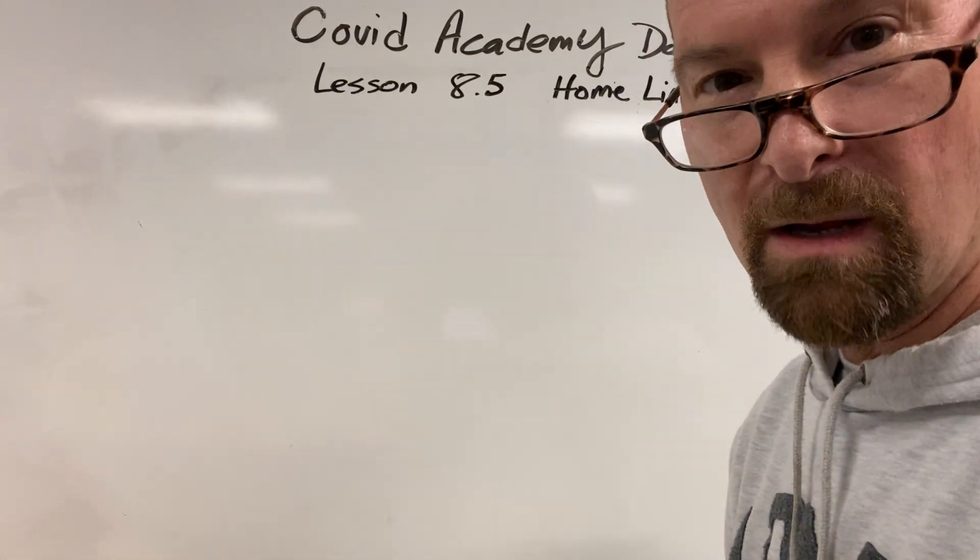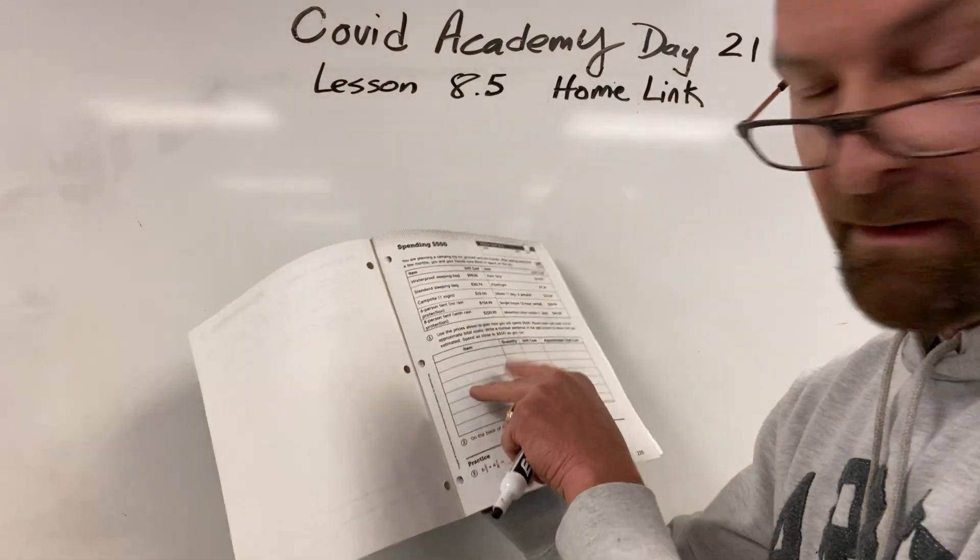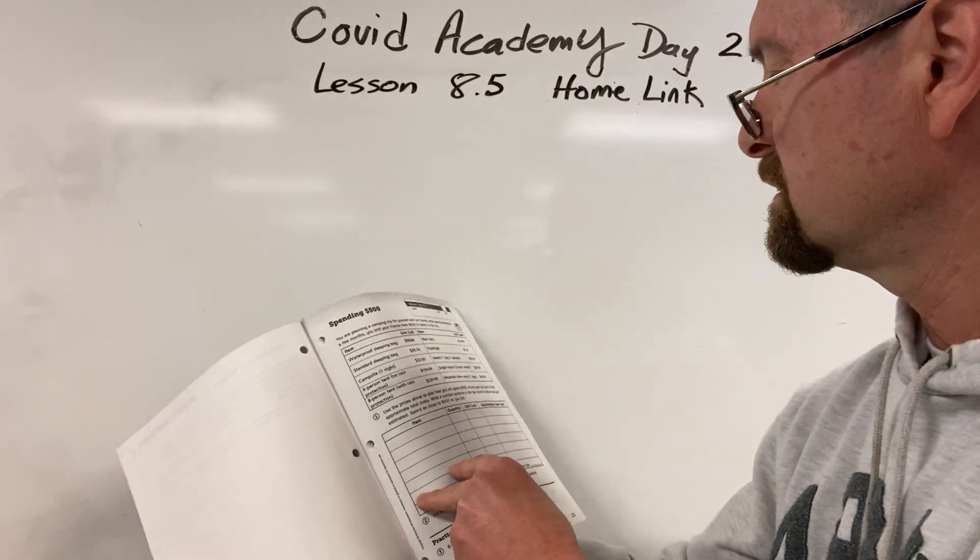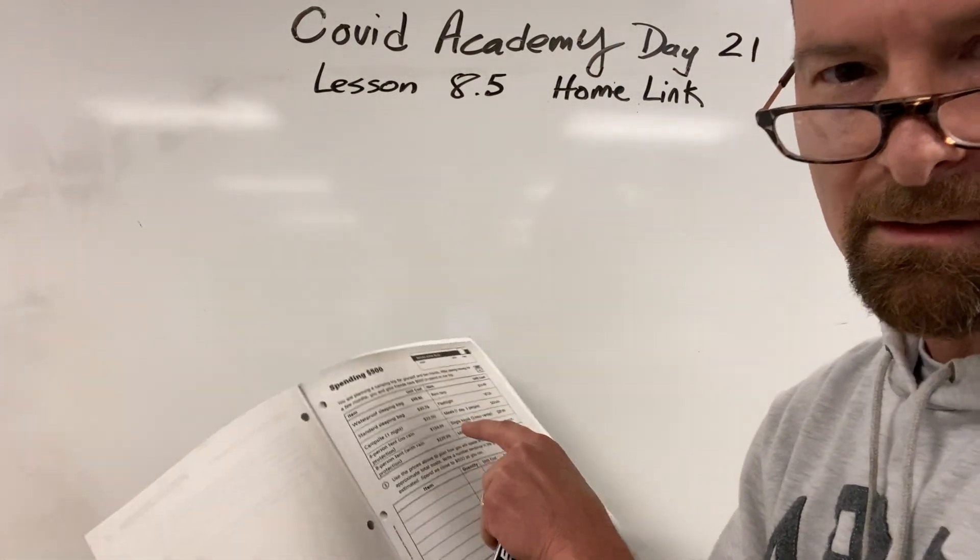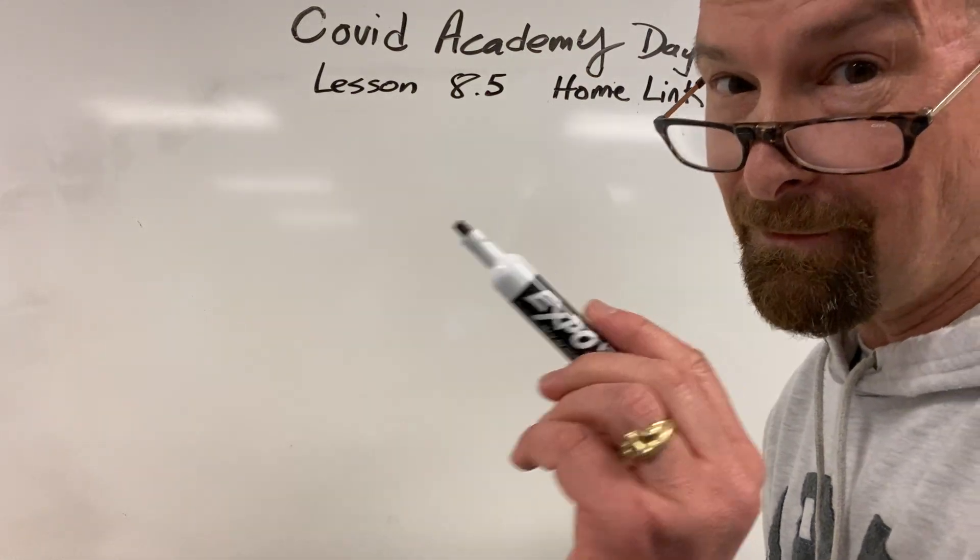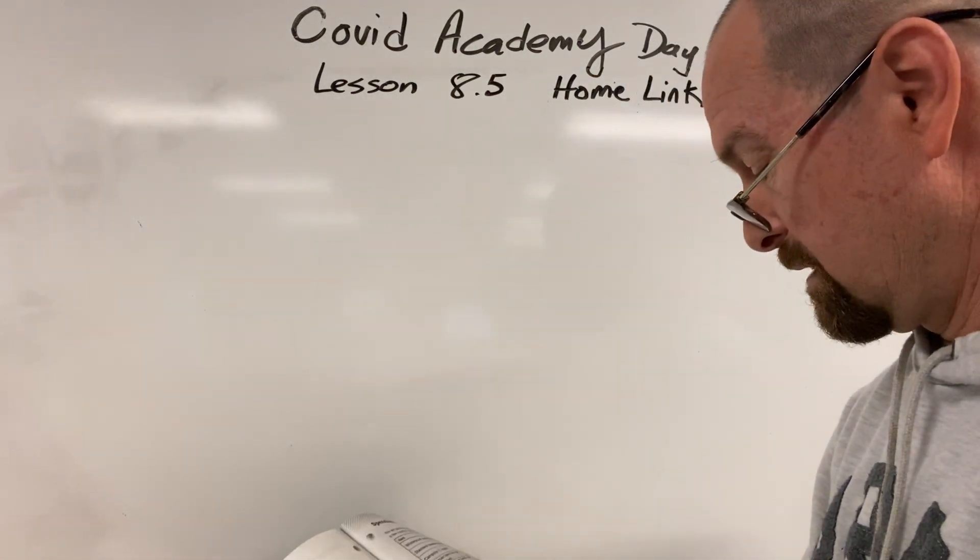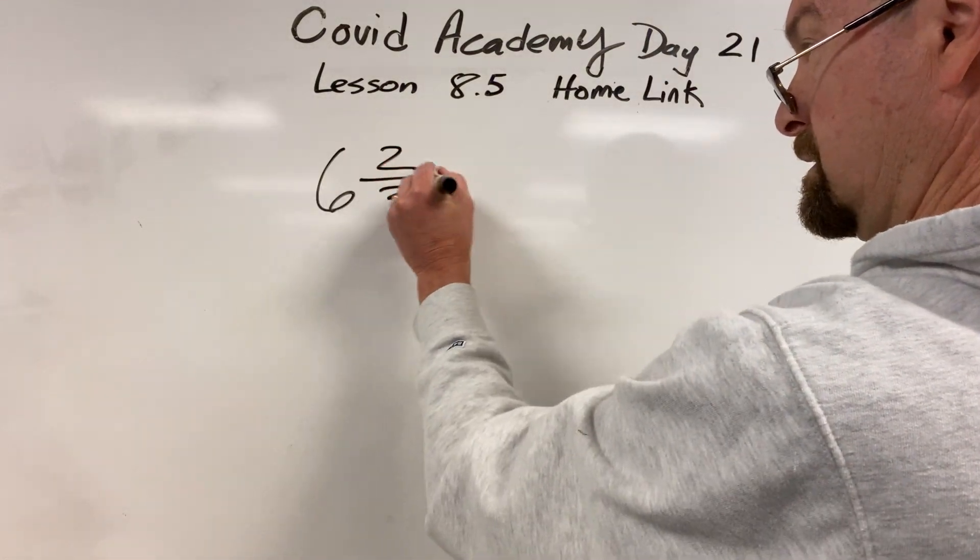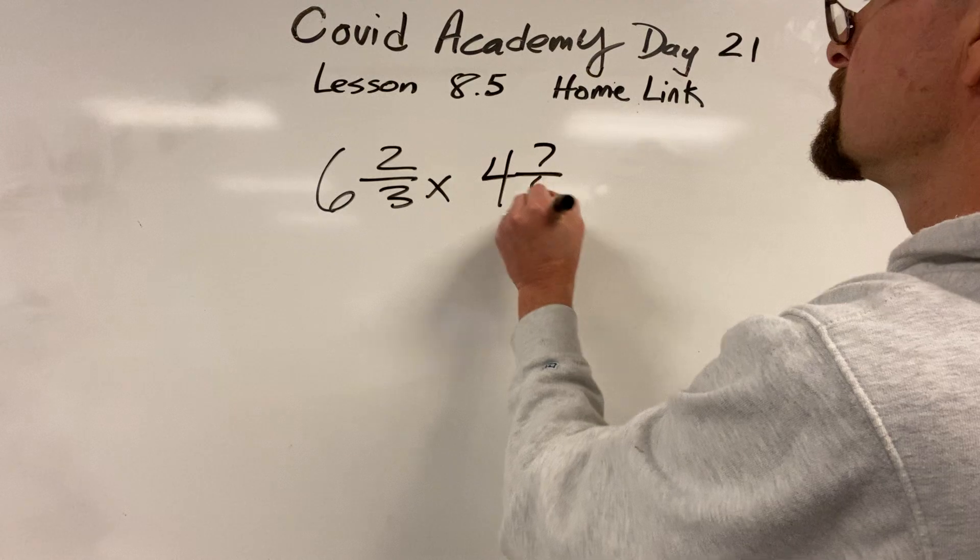Let's go over the practice problems at the bottom because this is all different for everybody. Because some of you said we don't want to go kayaking, but we want to do mountain bikes or whatever, and somebody might want to do both. So you figure out yours. You just can't spend more than 500 bucks. Alright, let's do the practice. Six and two-thirds times four, seven-eighths.